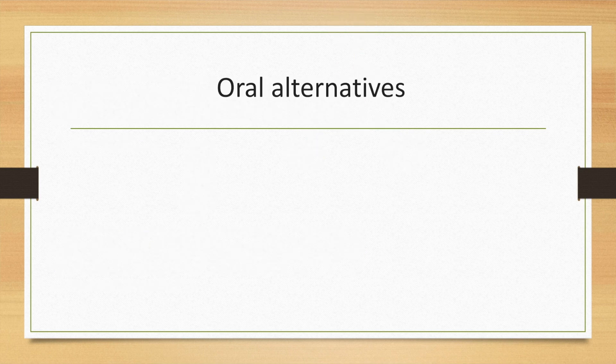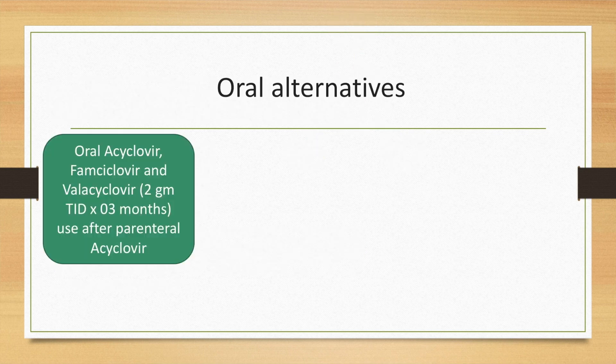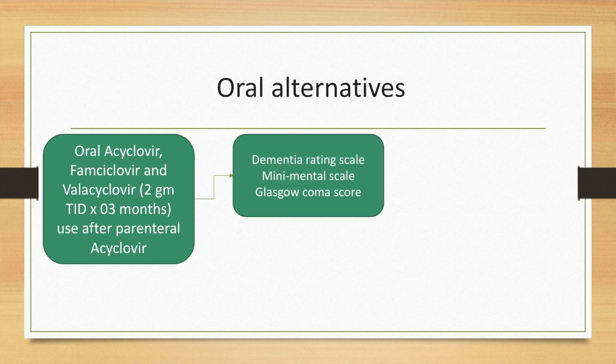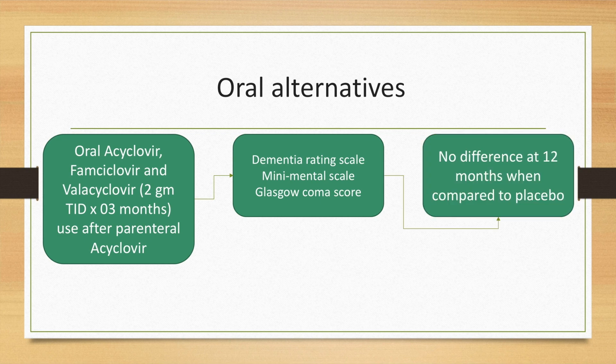Oral alternatives for acyclovir include famciclovir and valacyclovir, given at a dose of 2 g three times a day for 3 months, generally used after parenteral acyclovir. However, a study based on the dementia rating scale, mini mental scale, and Glasgow coma scale showed no difference at 12 months when compared to placebo.